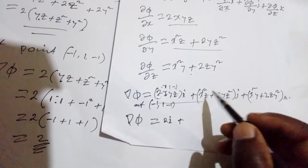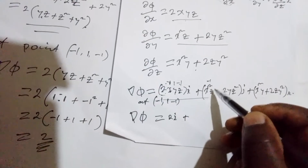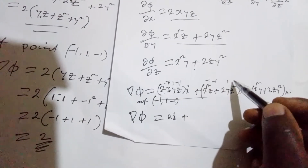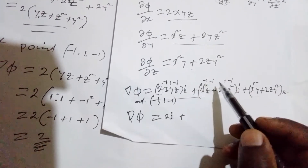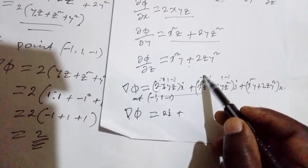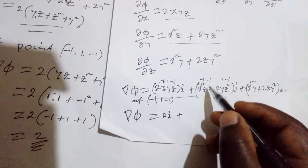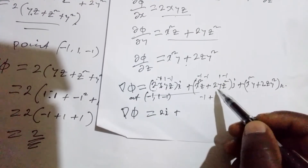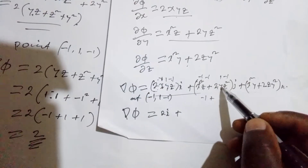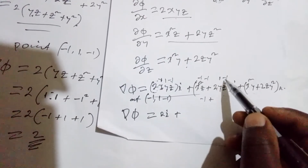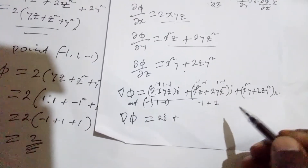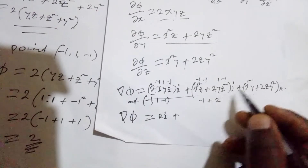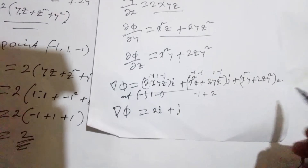Then plus, for the j component, x squared z plus 2yz squared: x is negative 1, z is negative 1, so negative 1 squared times negative 1 gives negative 1. Then plus 2 times 1 times negative 1 squared gives 2. So 2 plus negative 1 equals 1, giving us j.